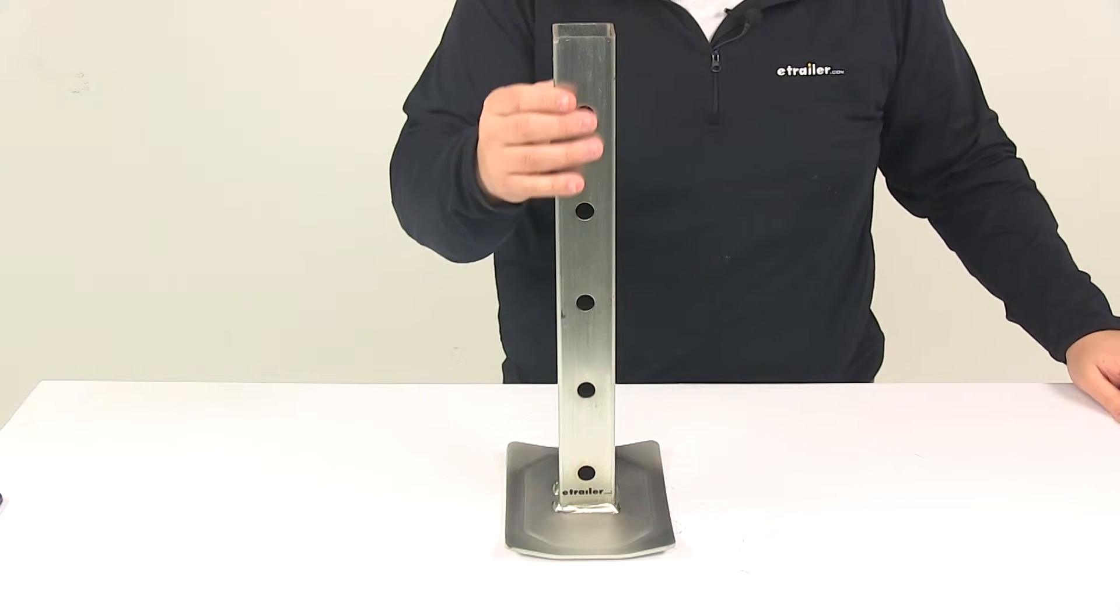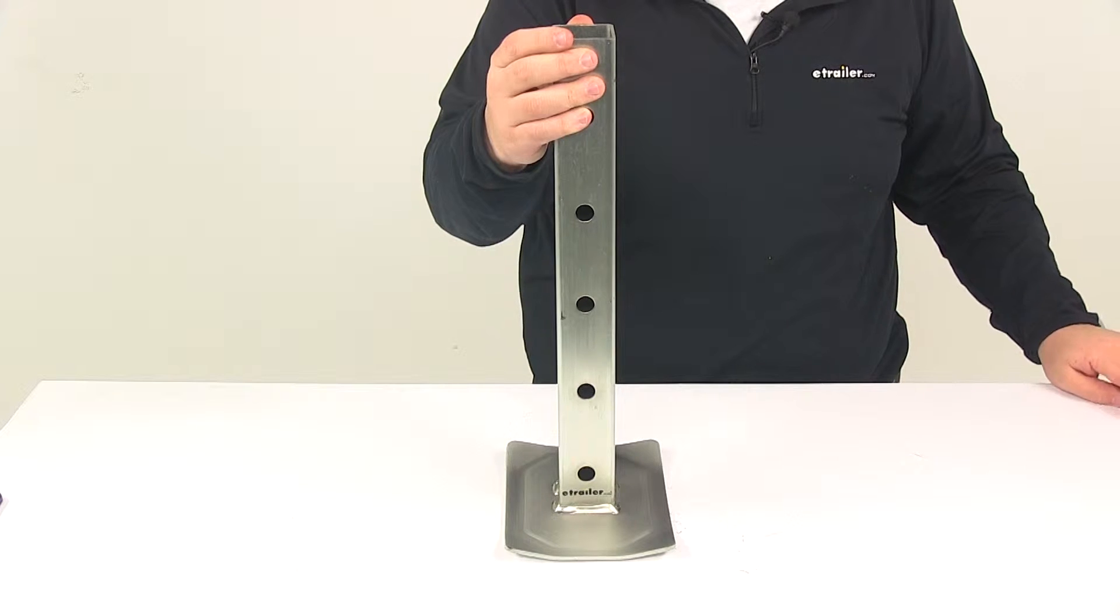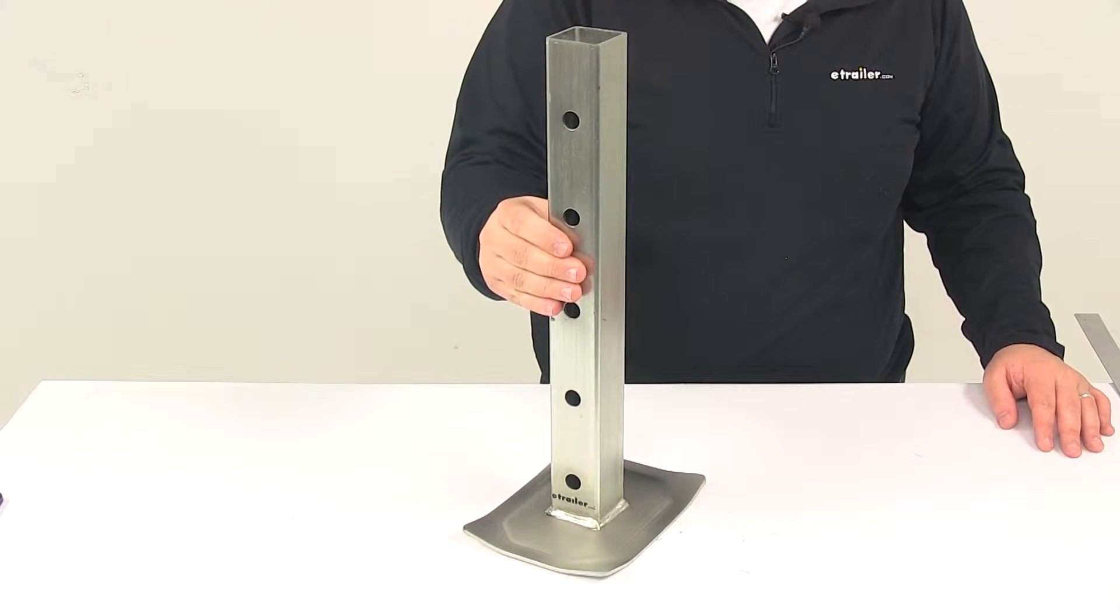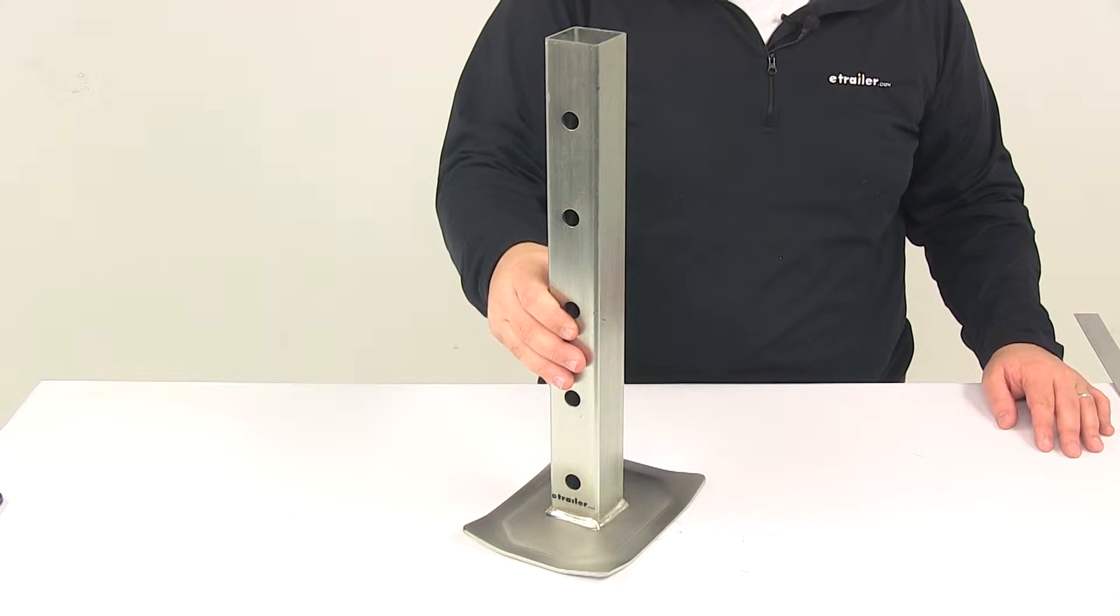Drop legs are designed to slide into the inner tube of the jack and secure with a pin and clip. This gives you more flexibility and adjustment for the height of your trailer jack.